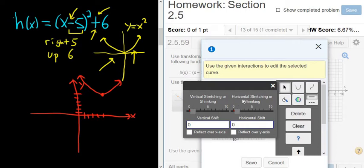Then it says vertical stretching or shrinking, horizontal stretching or shrinking. That's when you have numbers and stuff in front of the x's, or in front of the function. We don't have that. So we're going right 5. That's a horizontal shift when you go left and right. That's a positive 5.